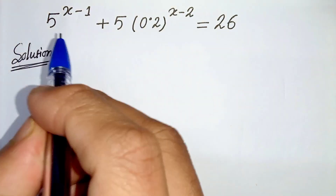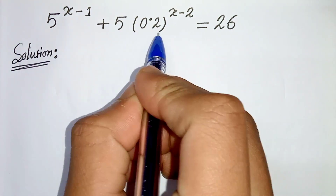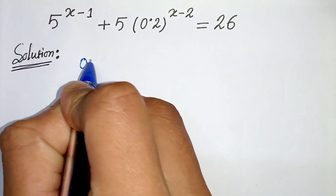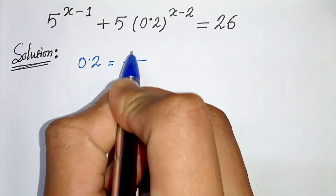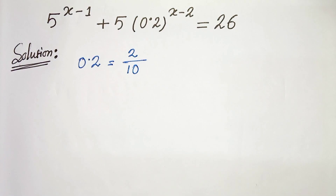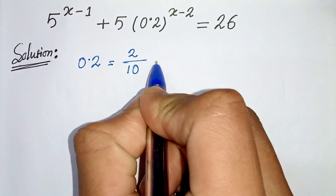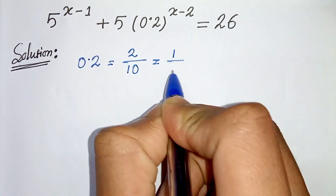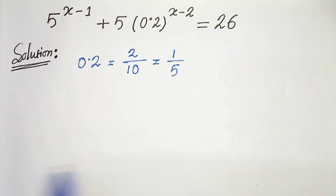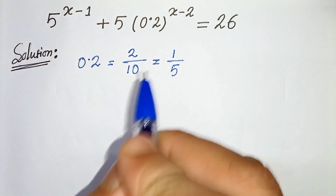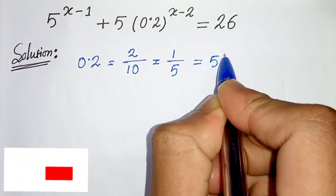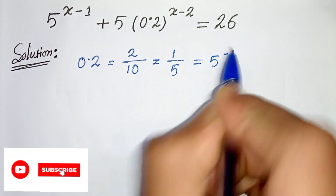First of all, we can write 0.2 as 2 divided by 10, and 2 divided by 10 can be written as 1 by 5, and 1 by 5 can be written as 5 to the power minus 1.